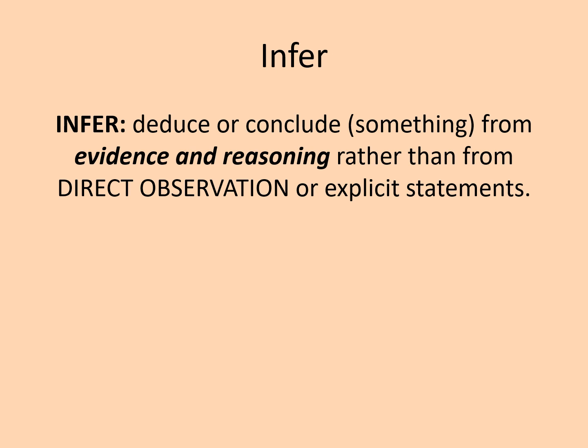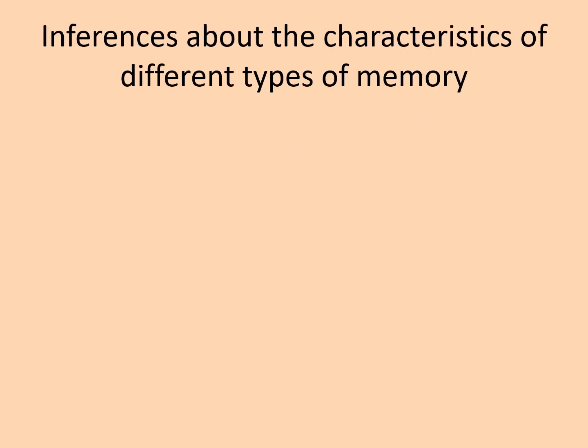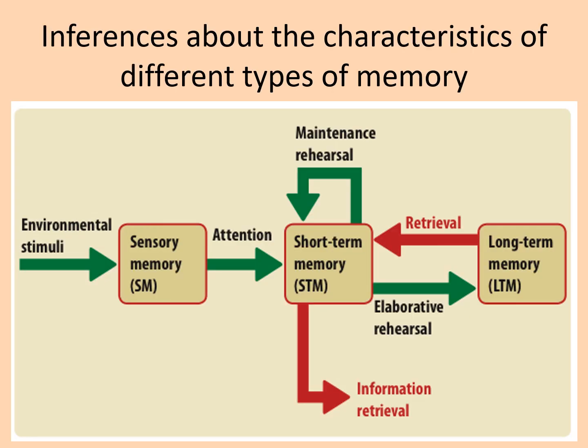The cognitive approach will do experimentation and scientific studies, and from the results they will deduce something about an internal mental process like memory, language or perception — like how do we remember things. For example, we make inferences about the characteristics of different types of memory.